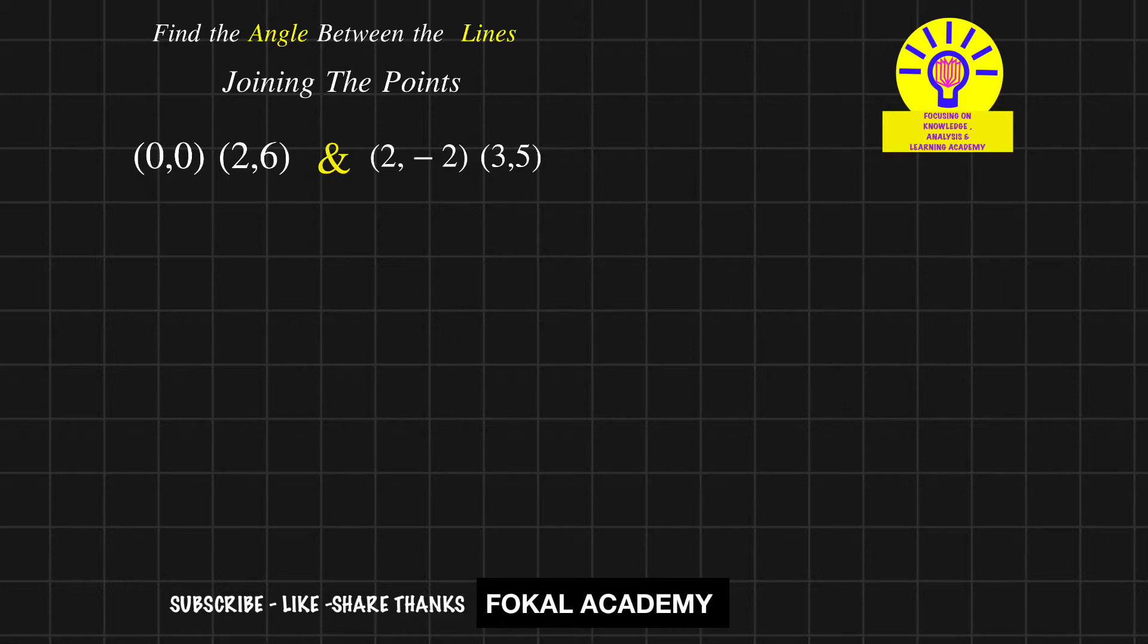First of all, find the slope for this line. When two points are given, that is (x1, y1) and another point (x2, y2), the slope m equals (y2 - y1) divided by (x2 - x1). That is, change in y values divided by change in x values.